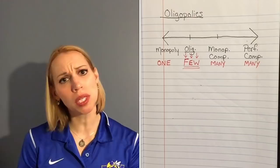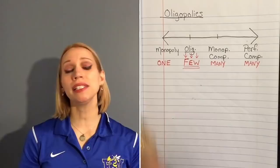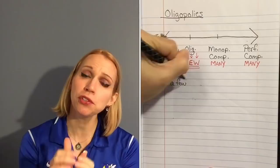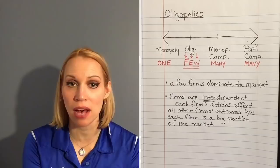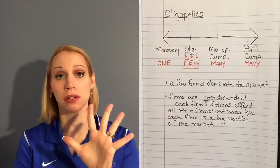In oligopolies, the prefix 'olig' means just a few. So in an oligopoly, you don't have many firms that dominate, and you don't have one firm that dominates — you have just a handful of firms that dominate the majority of the industry. The actions of one firm have a huge impact on the profits and outcomes of all the other remaining firms.